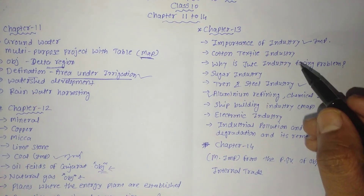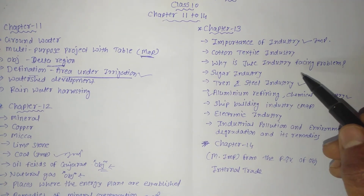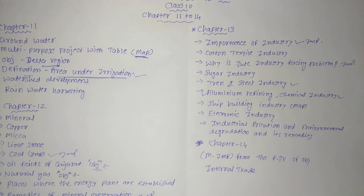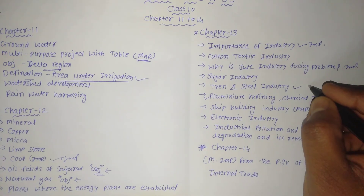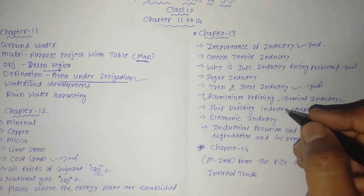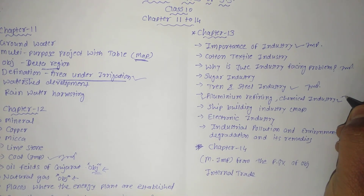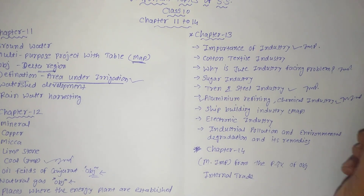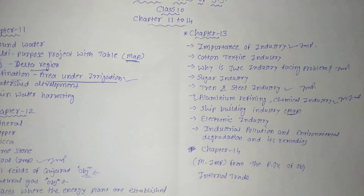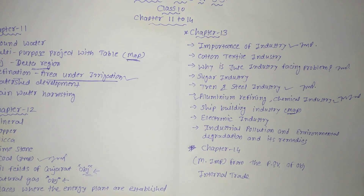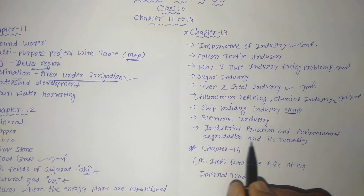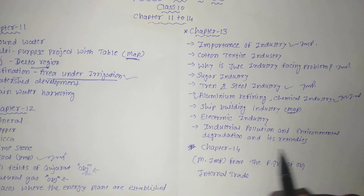Chapter 13: importance of industry — this is the most important question. Cotton textile industry, why the jute industry is facing a problem — also an important question. Sugar industry, iron and steel industry — important questions. Aluminum refining and chemical industry are both important questions. Shipbuilding industry can be shown on the map, so check where ship industries are built. Electronic industry, industrial pollution and environmental degradation and its remedies — also an important question.